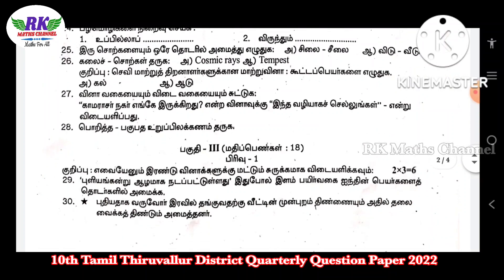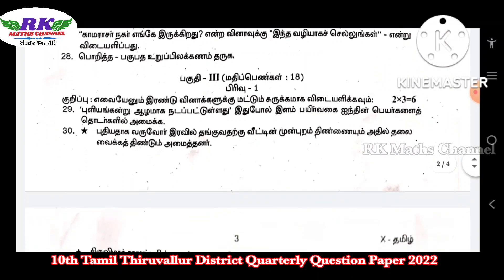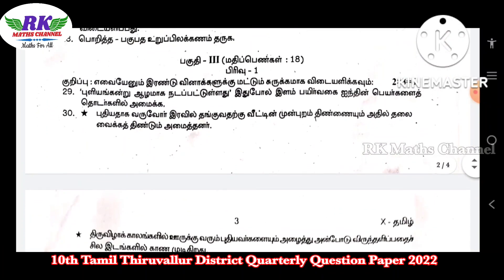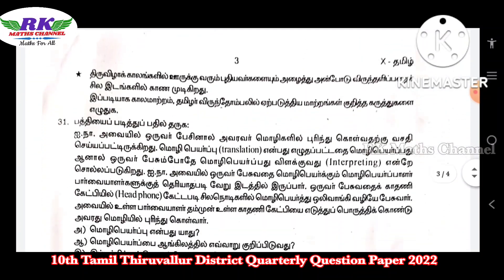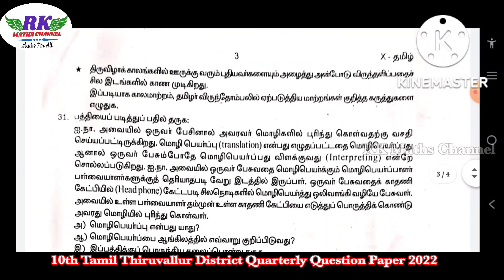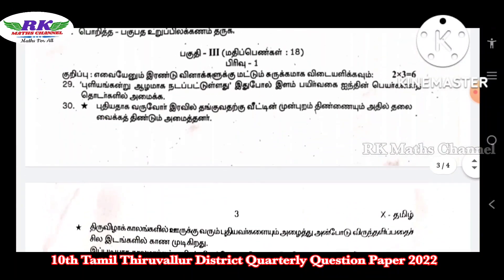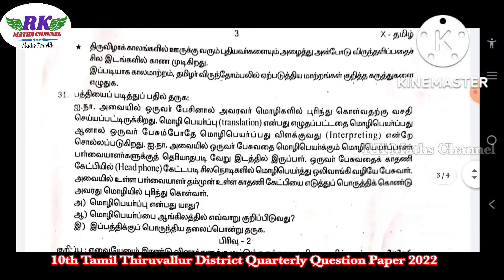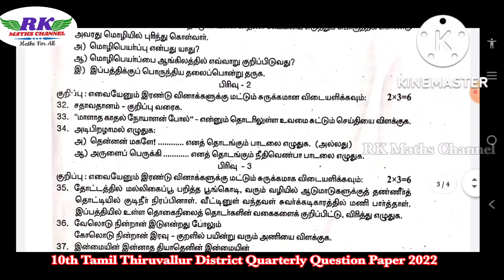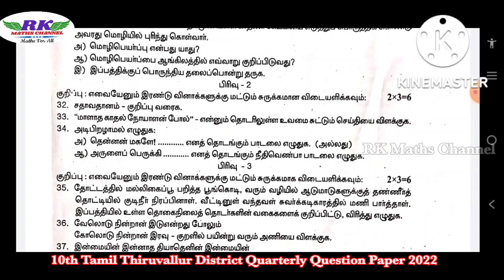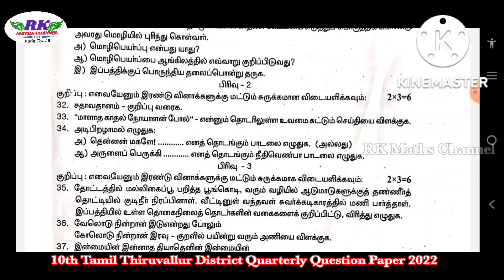Okay guys, next — Section 1 of Part 3. Question numbers 29, 30, and 31 — there are 3 questions. You can answer 2 questions. 2 questions at 3 marks each gives 6 marks. Next, Section 2 — there are 3 questions, and you can answer 2 questions. 2 questions at 3 marks each gives 6 marks.